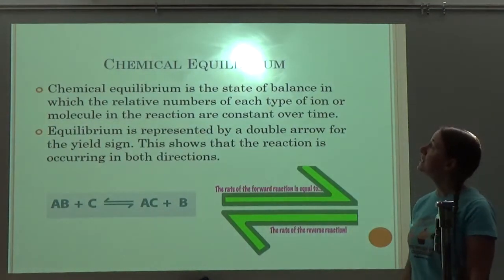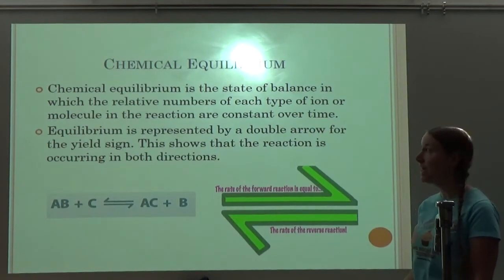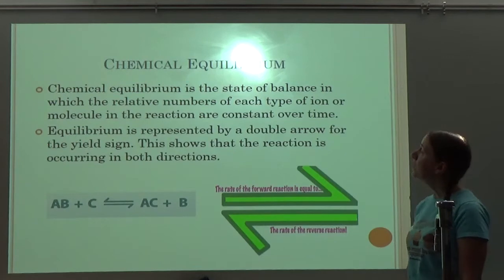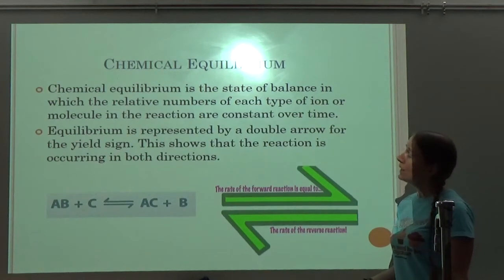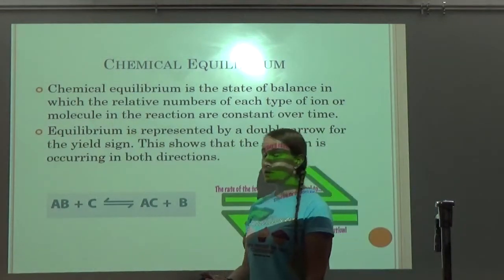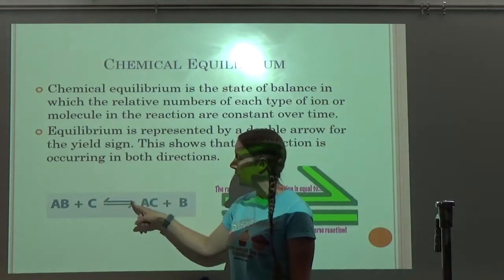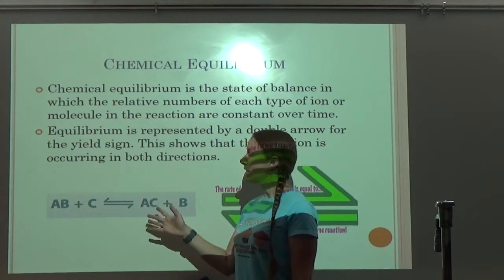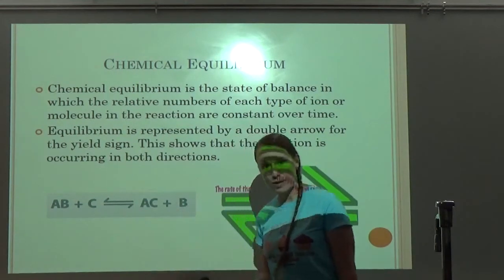Chemical equilibrium is the state of balance in which the relative numbers of each type of ion or molecule in a reaction are constant over time. Equilibrium is represented by a double arrow for the yield sign — this shows that the reaction is occurring in both directions. We'll do lots of chapters on equilibrium later, but whenever you see a double arrow, that's just saying the reaction is occurring in both directions.